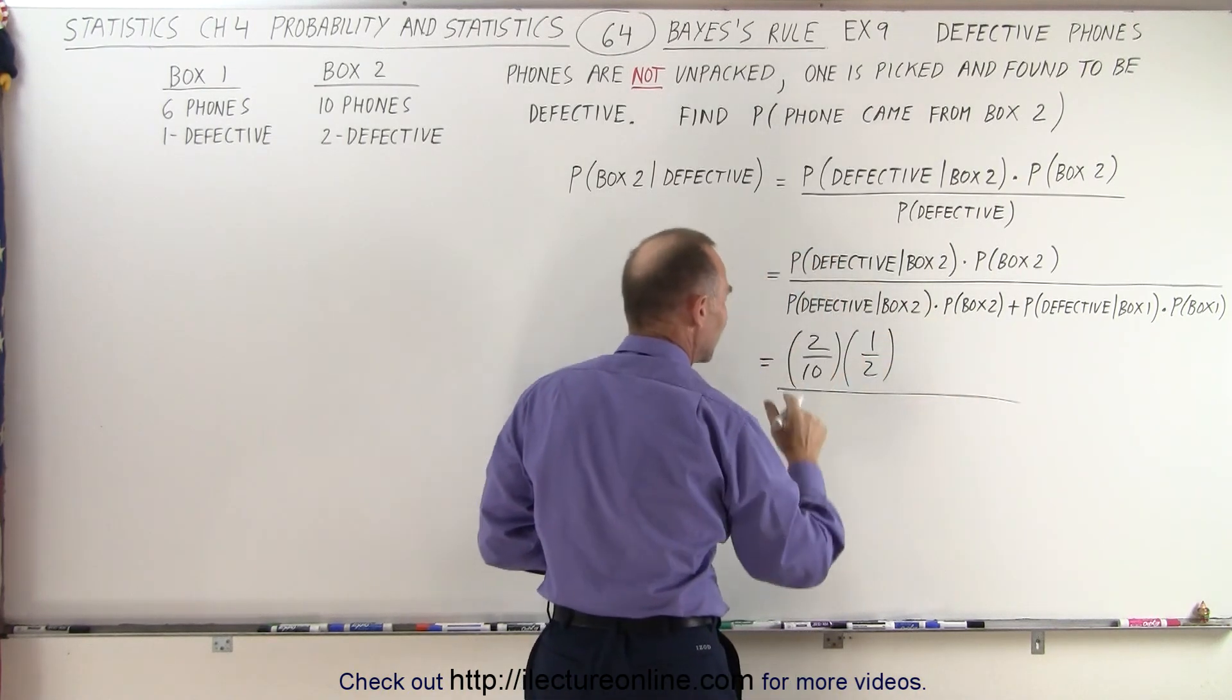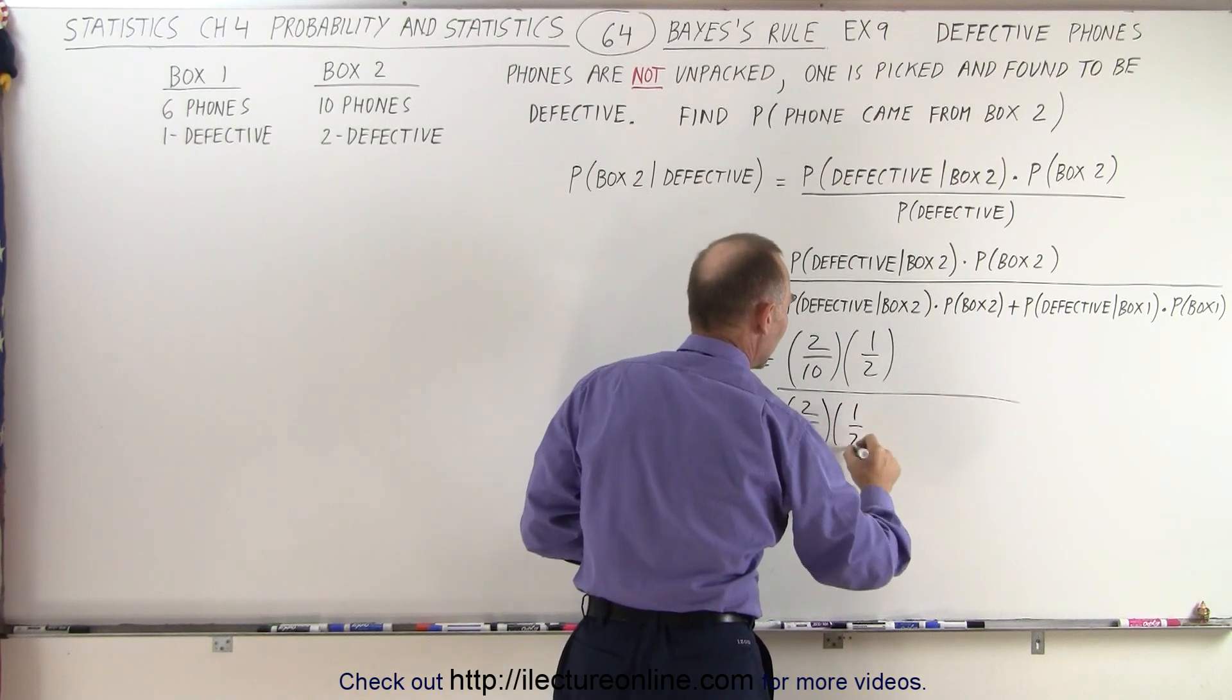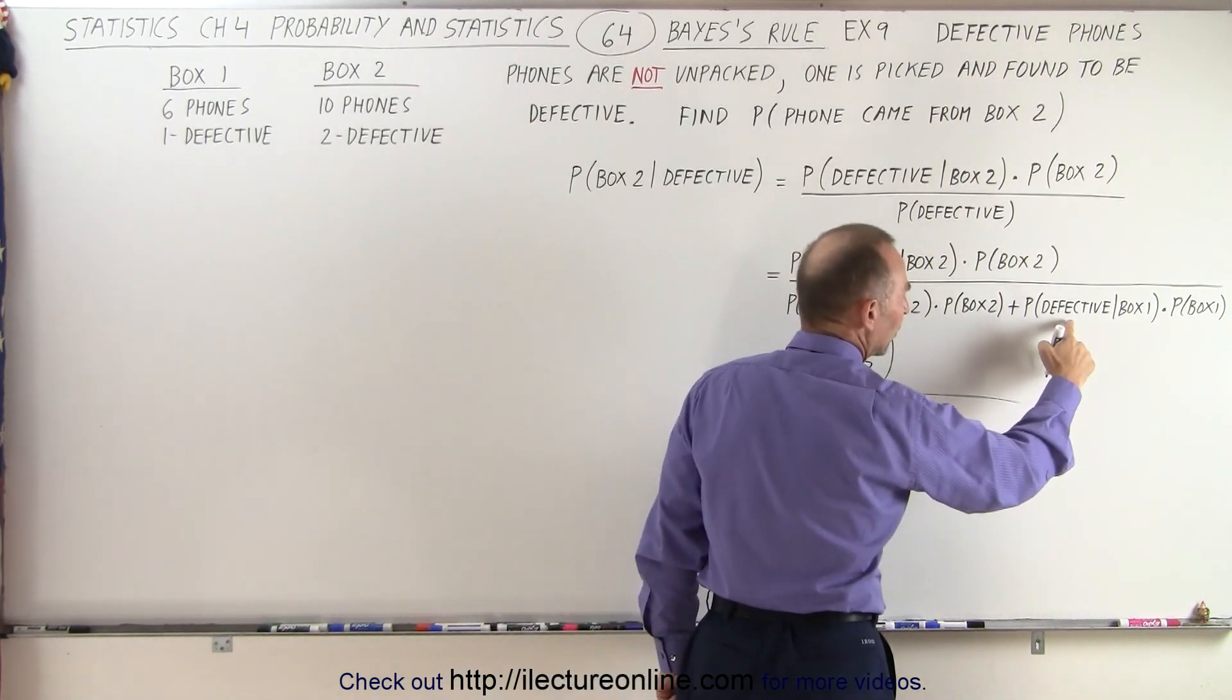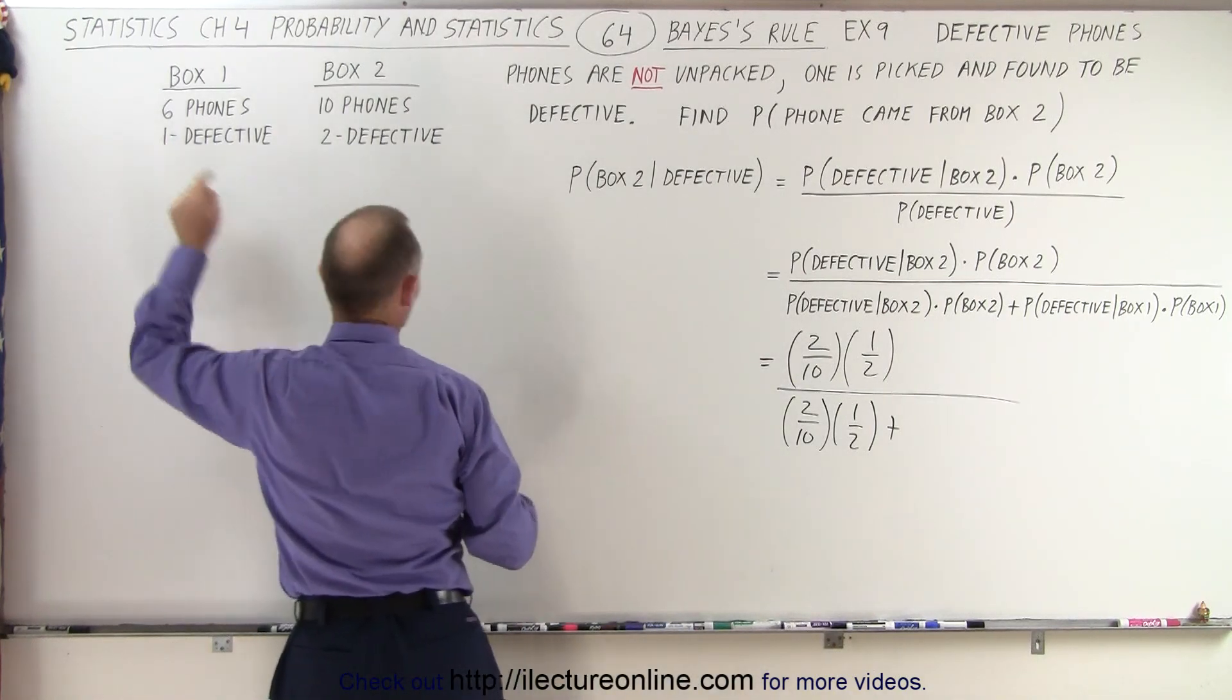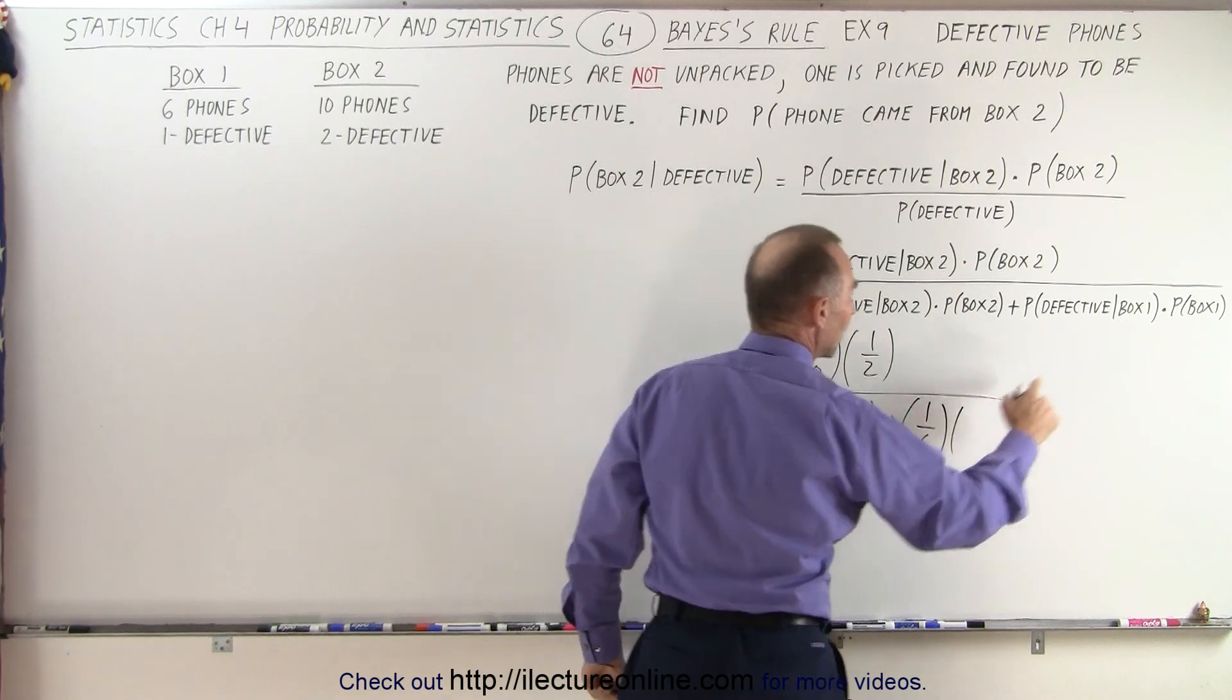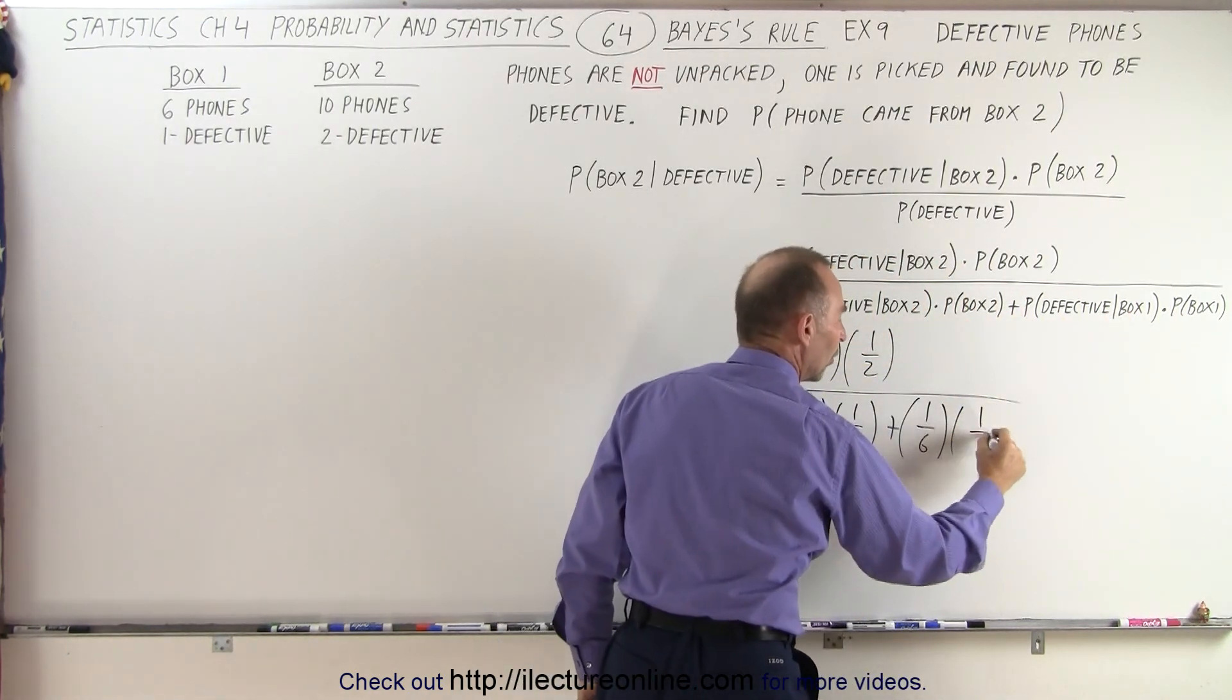So we divide that by the same thing again, two tenths times one half plus, we could also have picked it out of box one and so the probability that it's defective if we picked it out of box one. Six phones, one is defective, that means it's one out of six. And again, the probability of picking box one is the same as the probability of picking box two, which is one half.